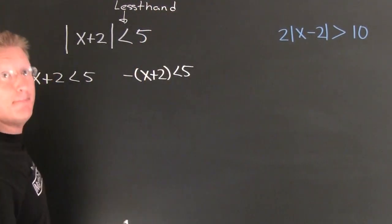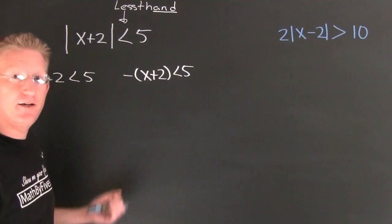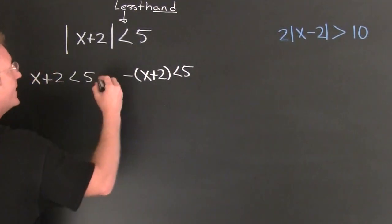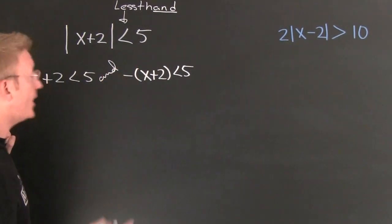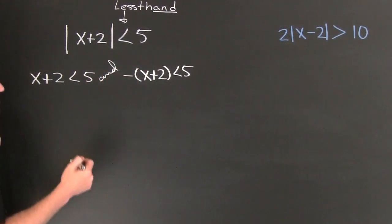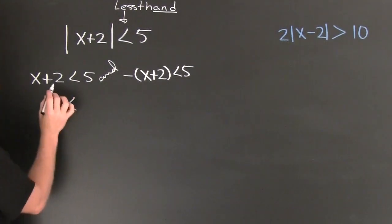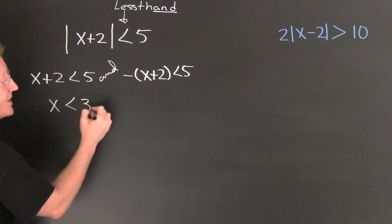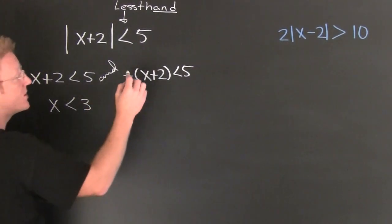My connecting word here comes from less than, purposefully misspelled so that the last ending of the word is 'and.' My connector here is 'and.' I'm going to finish this: x is smaller than, when I subtract 2 from both sides, that's going to be a 3.